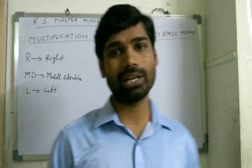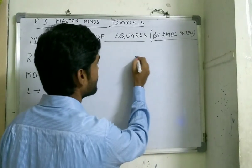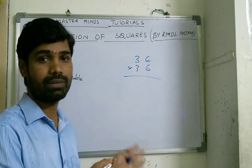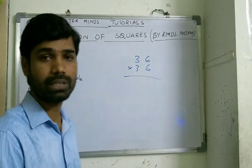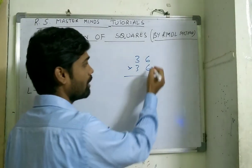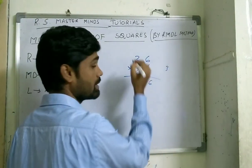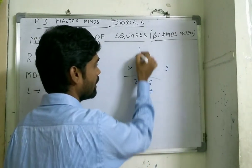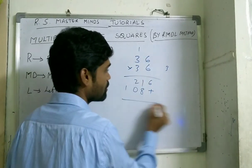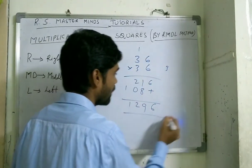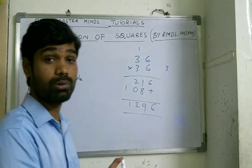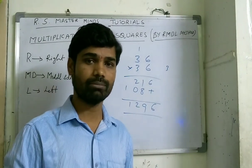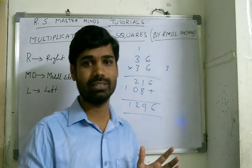Generally, how do we do the multiplication? Let's see with one example: 36 into 36, that is 36 squared. So 6 times 6 is 36, then 6 times 3 is 18 plus 3 is 21, then 3 times 6 is 18 and 1 plus 3 times 3 is 9 plus 1 is 10. So that gives 1296 — a three-step solution, which takes more time.